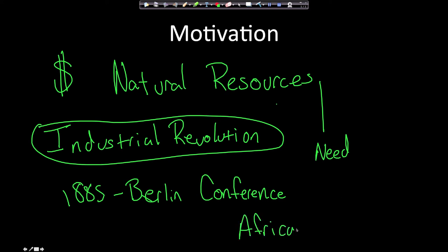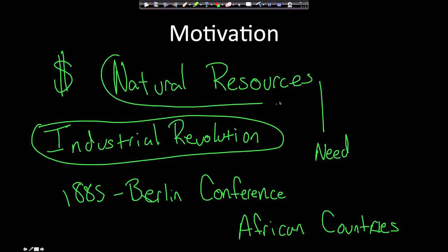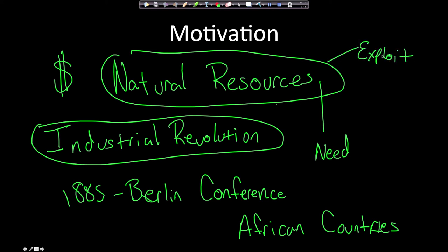Of course, the only people not present at this meeting were African countries — which doesn't make any sense, but that's how it went down. European countries split up Africa without any input from African nations, all for their natural resources. They wanted to exploit those resources and import them back to Europe, all as part of their economic system of mercantilism.